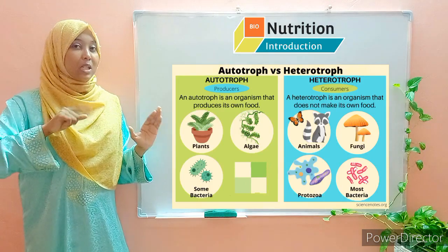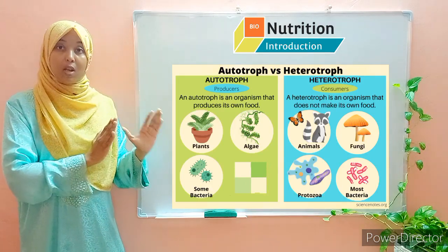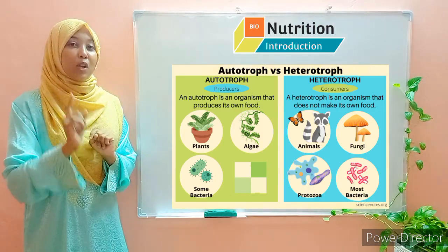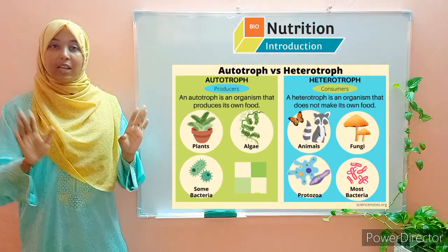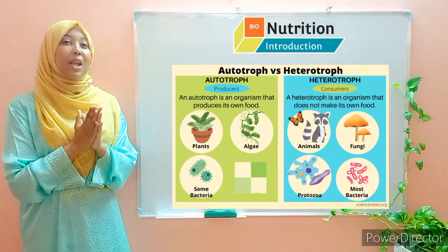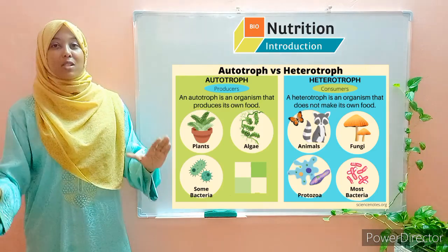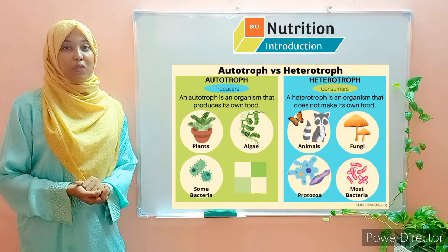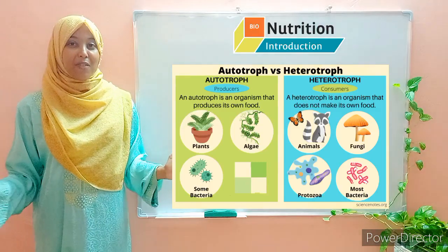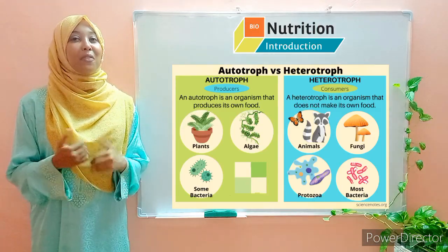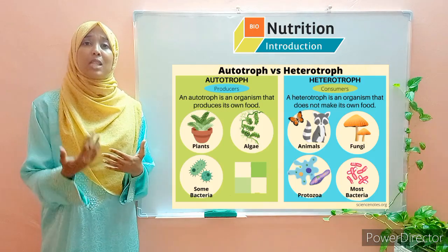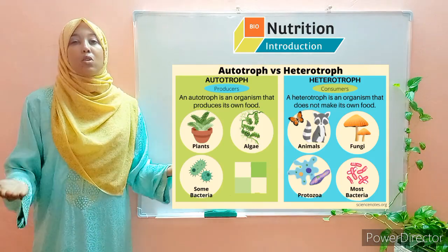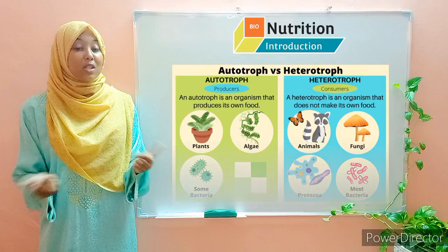Back to Protoctista — we also have protozoa, including Amoeba and Paramecium, which are heterotrophic. Moving to fungi: all fungi are heterotrophic, all of them. Kingdom Plantae — all plants are autotrophs. And Kingdom Animalia — all animals are heterotrophic. This is useful for exam questions that ask you to identify the kingdom whose members are all autotrophic or heterotrophic.